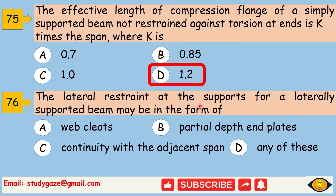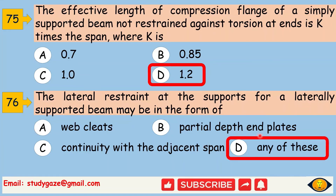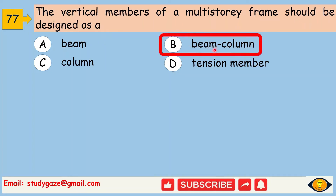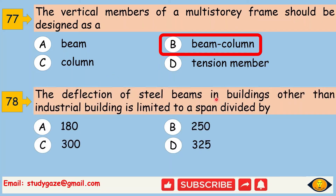The lateral restraint at the supports for a laterally unsupported beam may be in the form of any of these: web cleats, partial depth end plates, or continuity with the adjacent span. Next, the vertical members of a multi-story frame should be designed as a beam-column. Next, the deflection of steel beams in buildings other than industrial buildings is limited to span divided by 300.